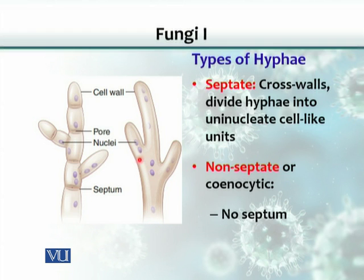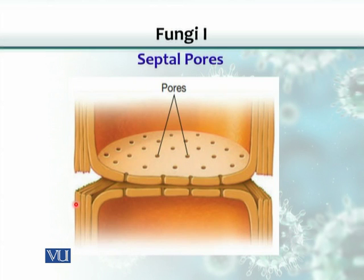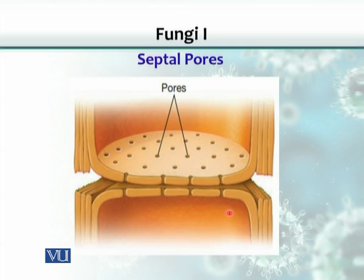The blue dots shown here are nuclei. Cells could be uninuclear or multinuclear — there could be one nucleus within a cell, or two, three, or multiple. Even in septate hyphae, if you look closely, there are pores present in the septum. These pores are a way of communication between two adjacent cells, allowing cytoplasm to stream through. Nutrients absorbed from the cells are then transported from one cell to another through these pores.